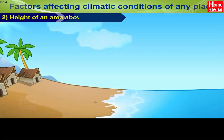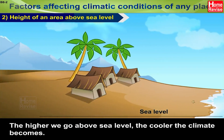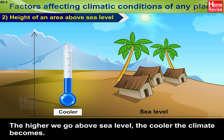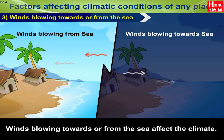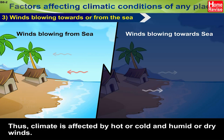2. Height of an area above sea level: The higher we go above sea level, the cooler the climate becomes. 3. Winds blowing towards or from the sea affect the climate. Thus, climate is affected by hot or cold and humid or dry winds.